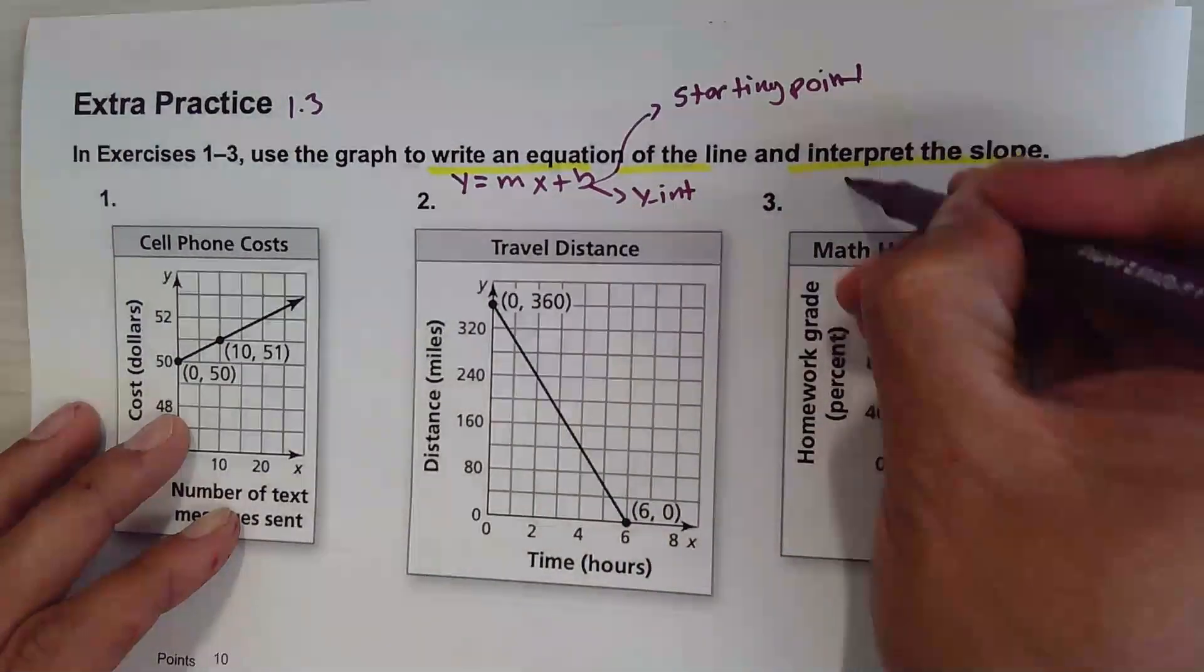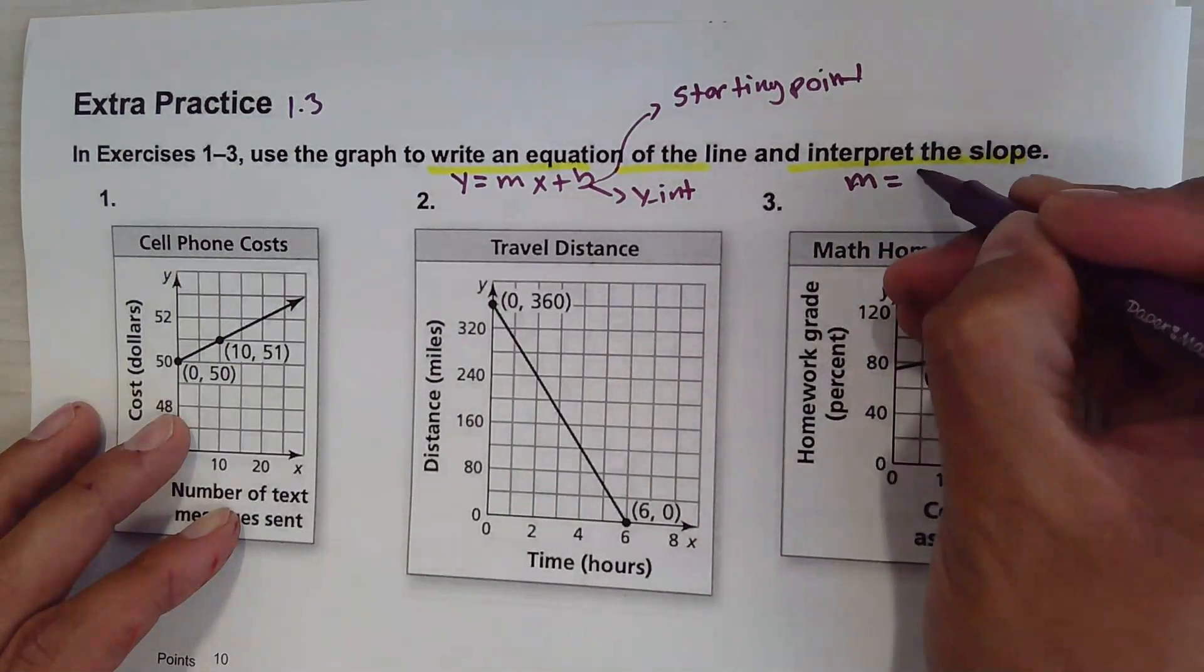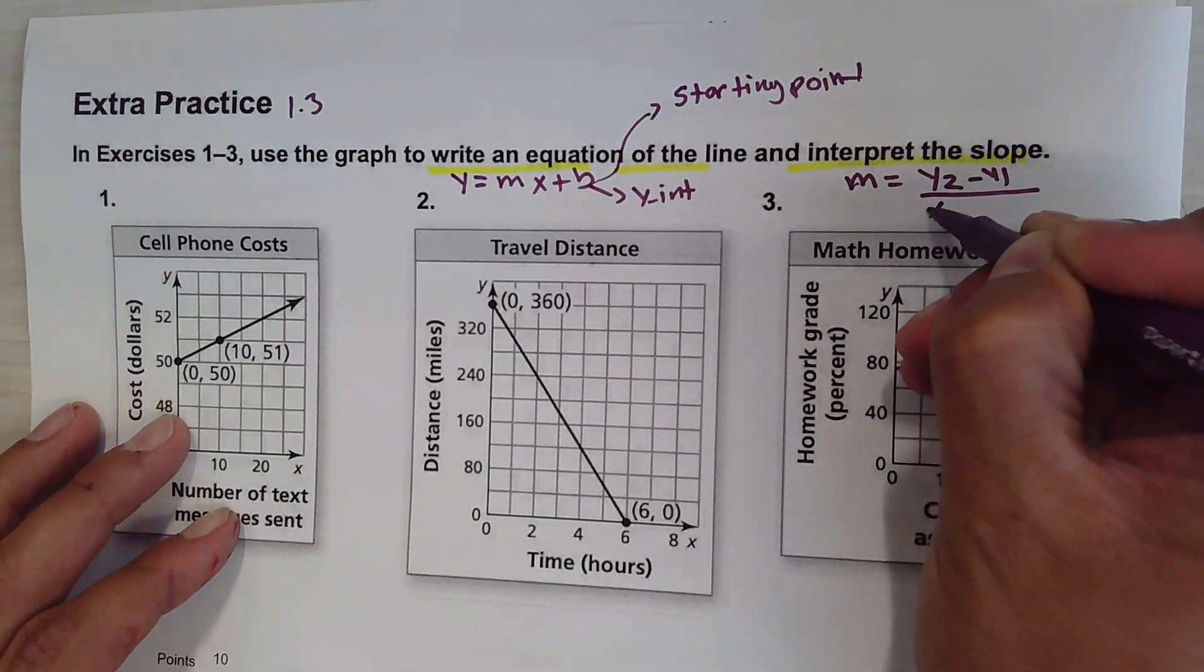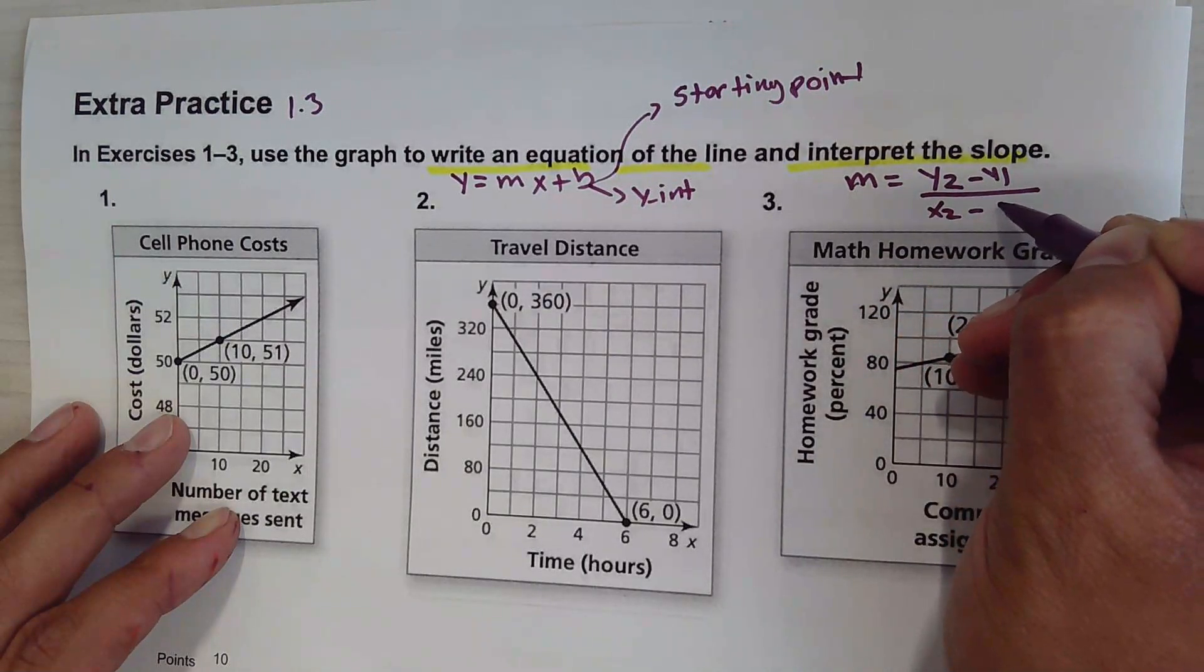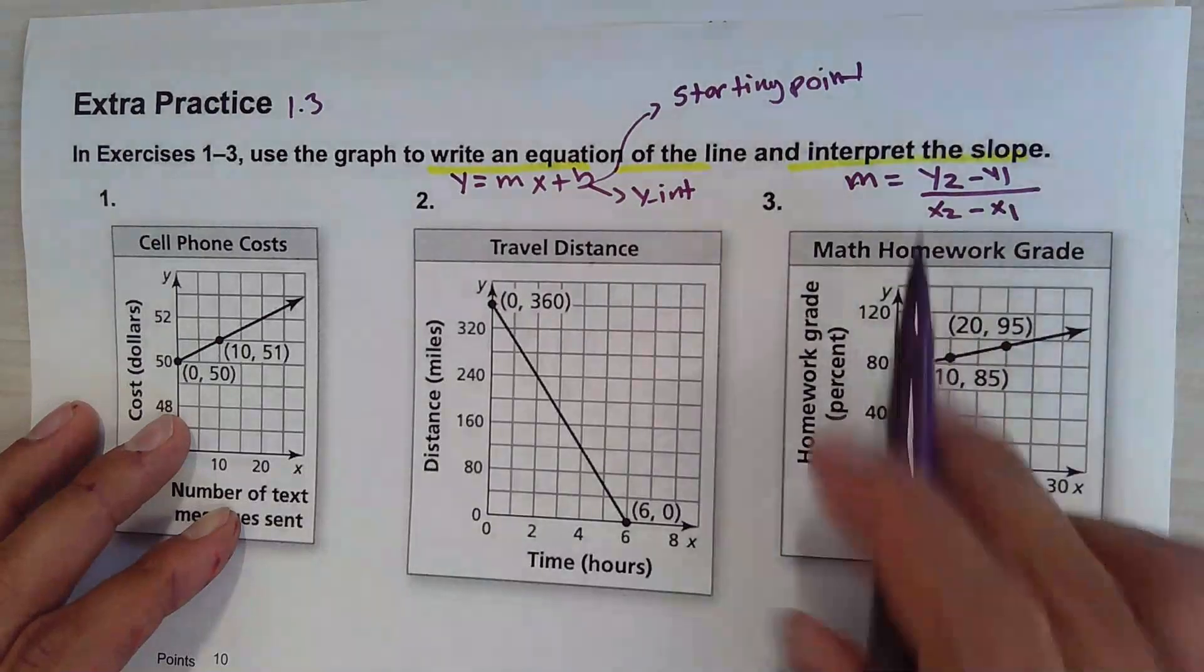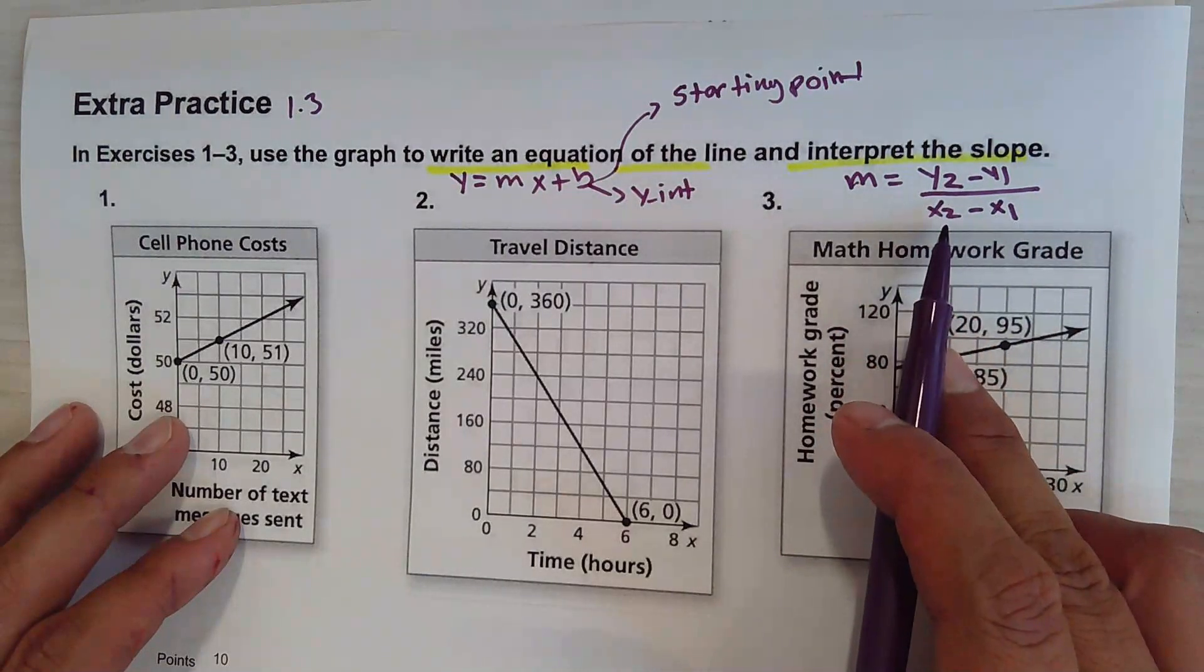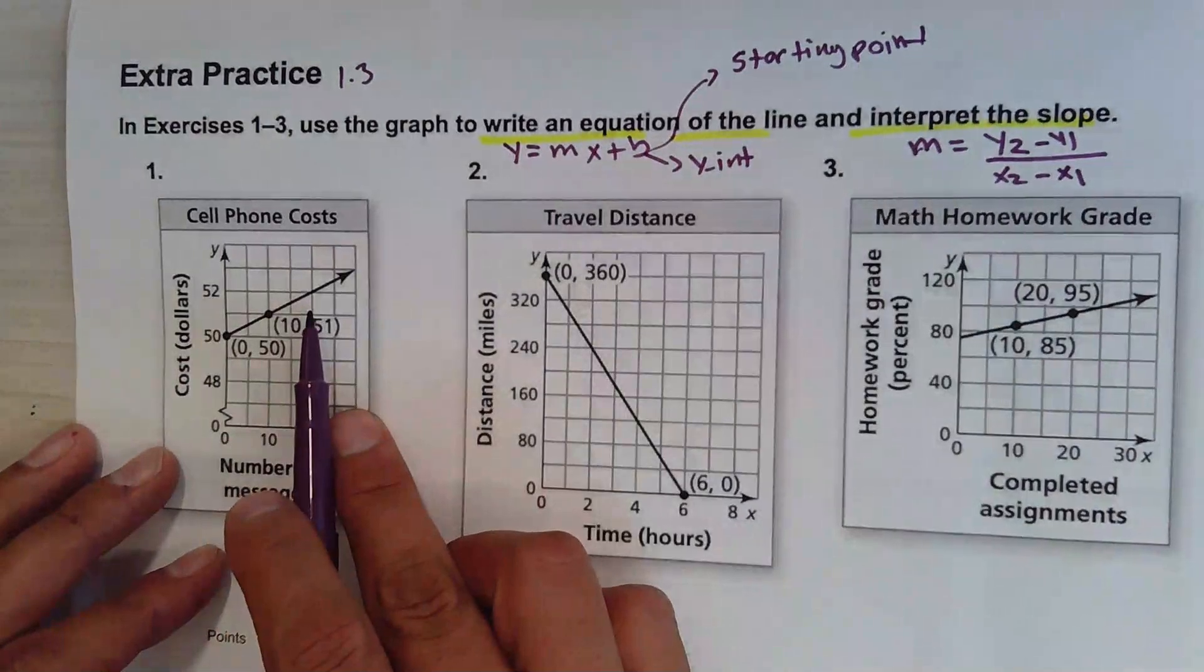Interpret the slope. To write the equation of the slope, that's going to be y2 minus y1 over x2 minus x1. The difference of the y values over the difference of the x. Let's begin with question number one.